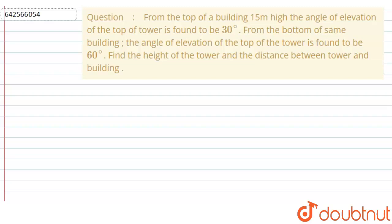From the top of a building 15 meters high, the angle of elevation of the top of a tower is found to be 30 degrees. From the bottom of the same building, the angle of elevation of the top of the tower is found to be 60 degrees. Find the height of the tower and the distance between the tower and the building.